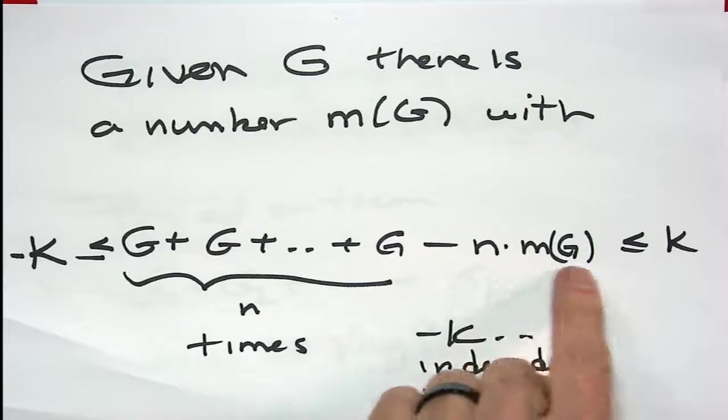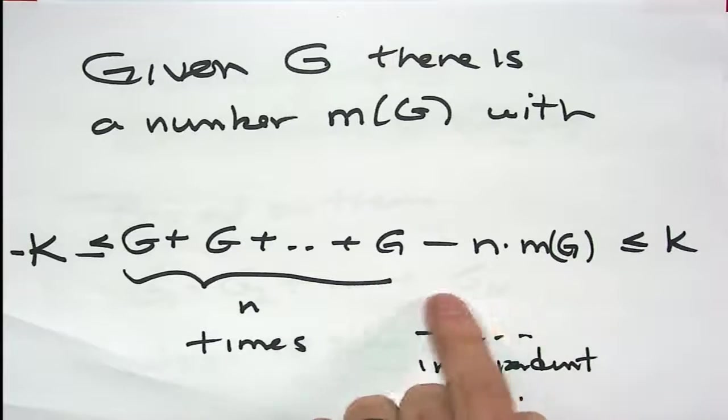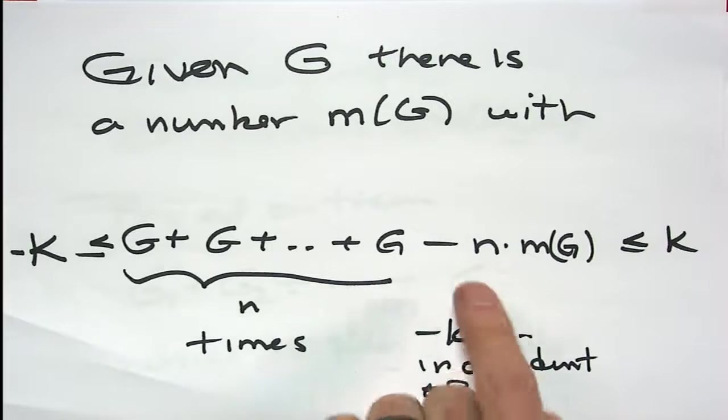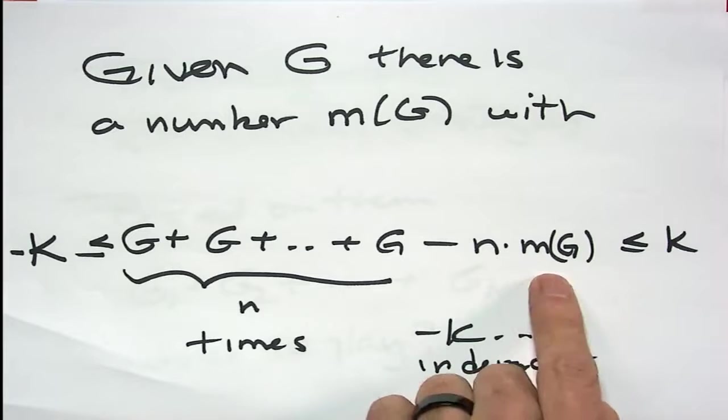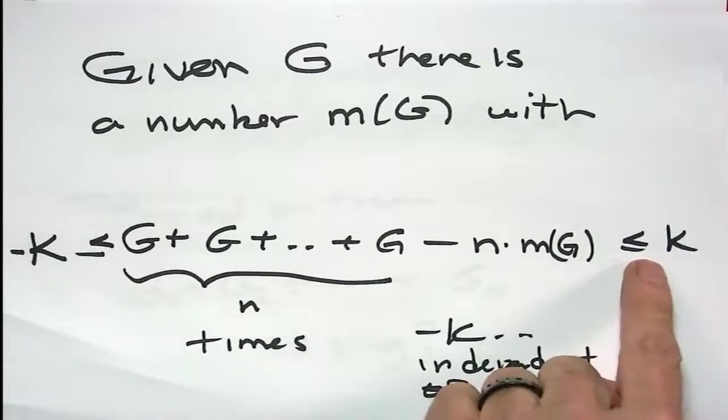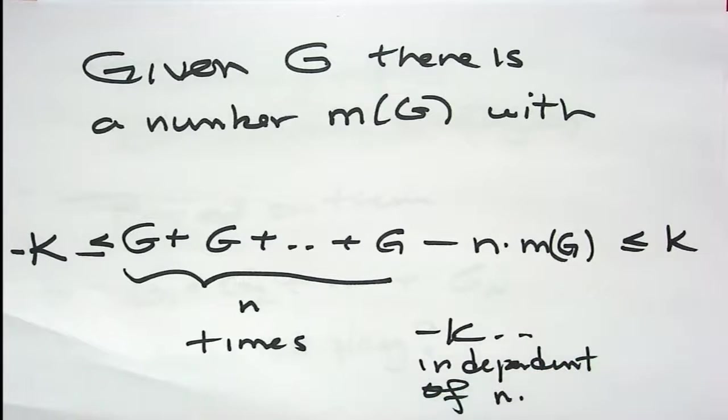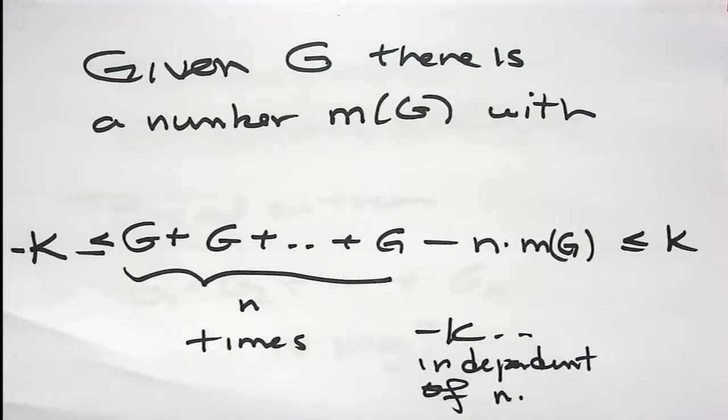that this is within a bound, which doesn't depend on N, of a multiple of the mean value. So large number of copies of G played together behave approximately like a number. And as N gets large, K doesn't depend on N, so K is small relative to N, so as N gets large, this approximation gets better and better, at least relatively.